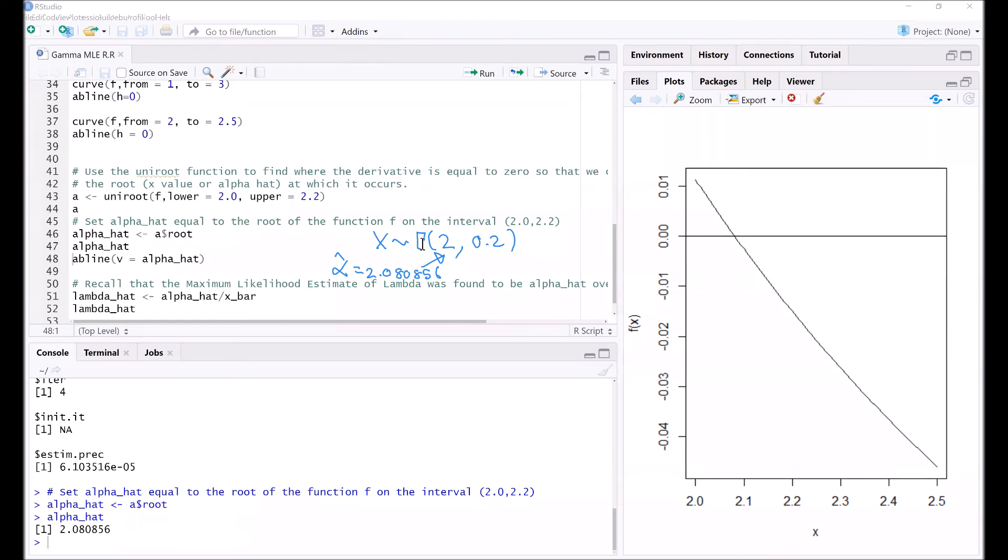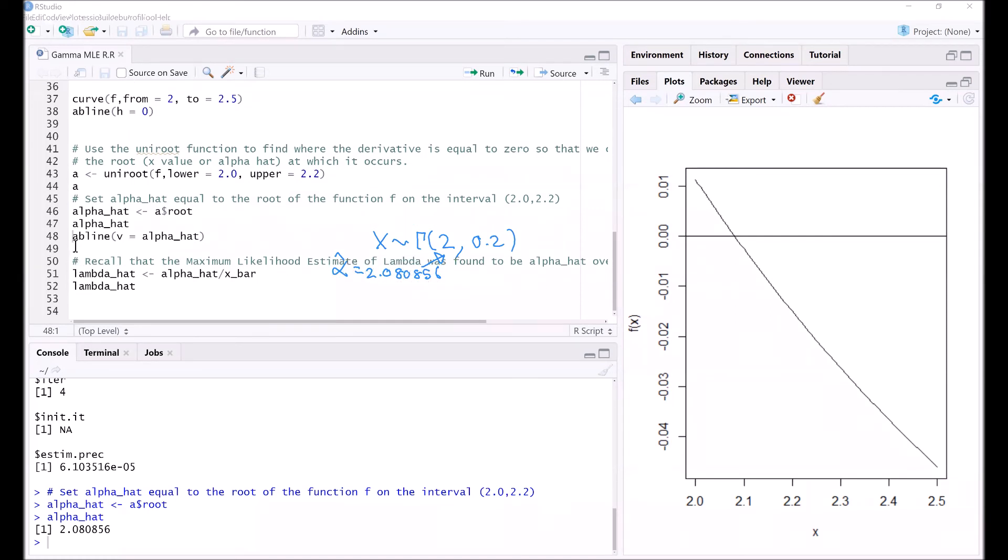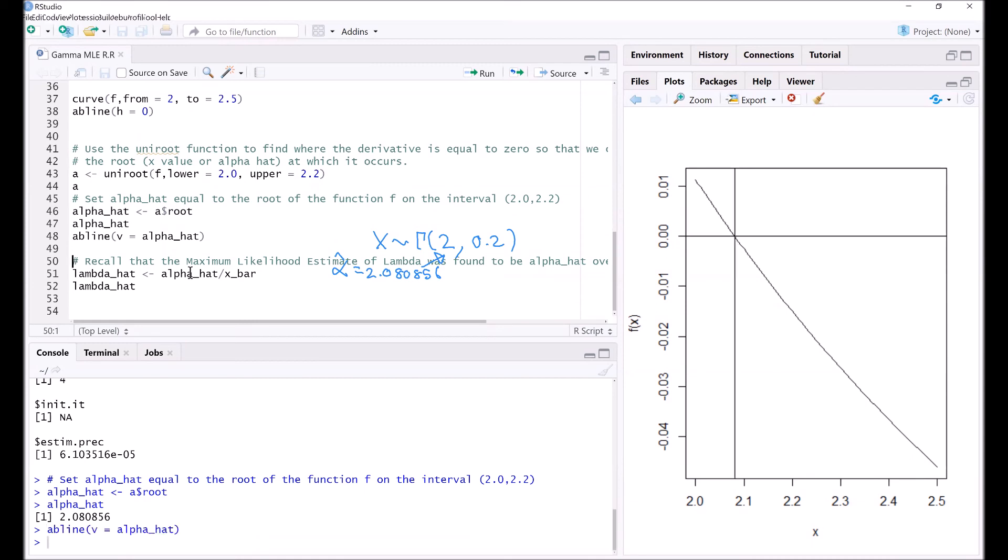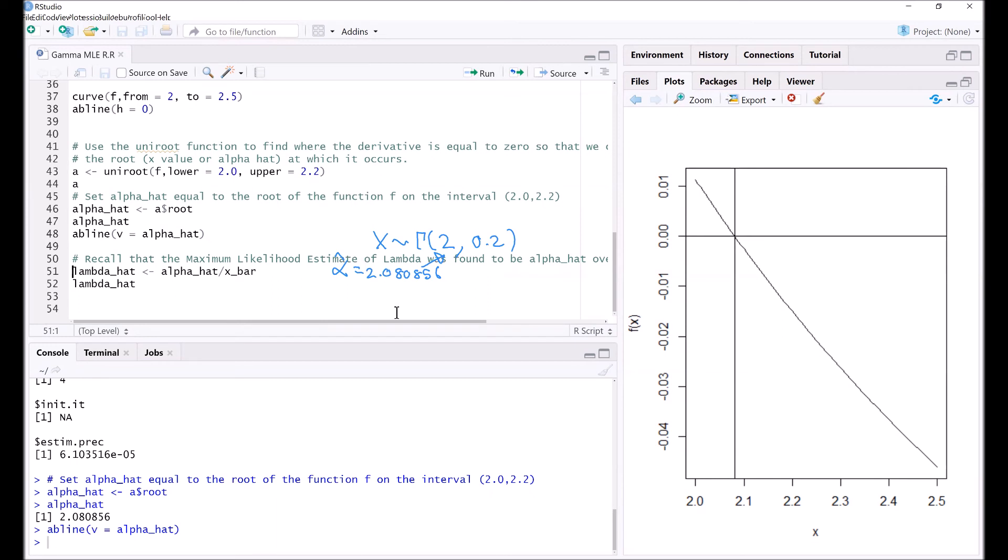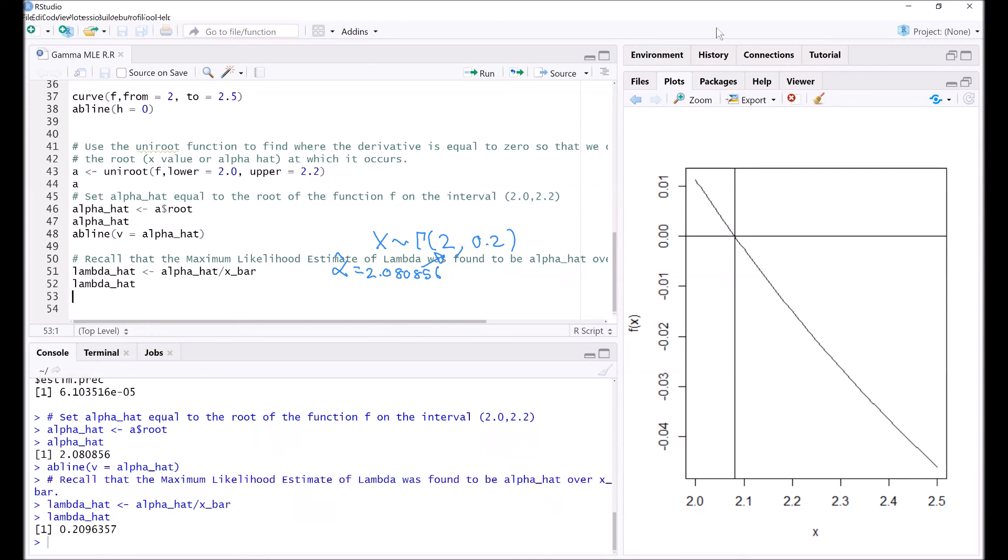Lastly, we will work out lambda hat. Lambda hat we found is equal to alpha hat divided by x-bar. Now that we have the value of alpha hat of 2.080856, we can find lambda hat and it's equal to 0.2096. So lambda hat is equal to alpha hat over x-bar, and alpha hat is 2.080856, so we've now found that lambda hat is equal to 0.2096357.